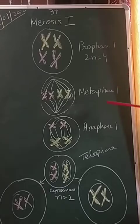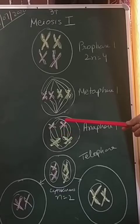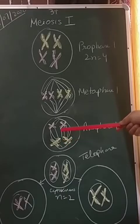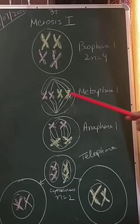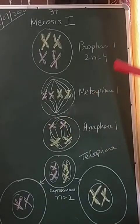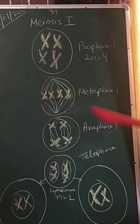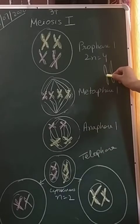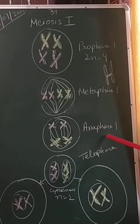In anaphase one, the homologous chromosomes will separate — one goes here and another goes there. Meanwhile, sister chromatids remain attached to each other with the help of the centromere. The centromeres are here, through which the sister chromatids are attached. This one is your sister chromatid and this one is your sister chromatid, and two sister chromatids are joined by the centromere.